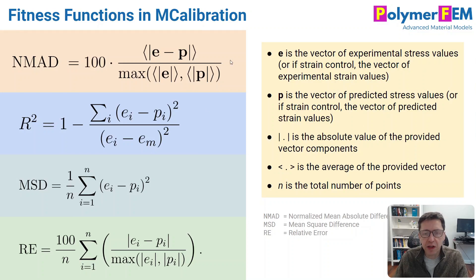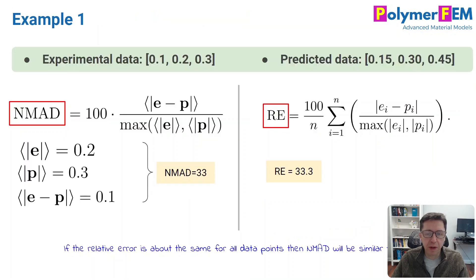NMAD is the one I've been using for years. As you can see from the equation here, it's the average difference between the experimental and prediction divided by the max of the experimental or the predicted. That gives you an error in percent. But the new RE value, which is relative error, does the same thing but on a point-by-point basis and takes the average of those. This makes a big difference in some cases between these two error measures.